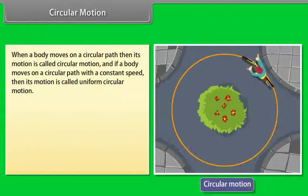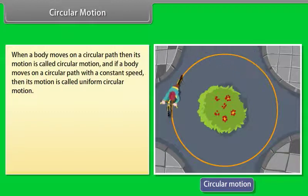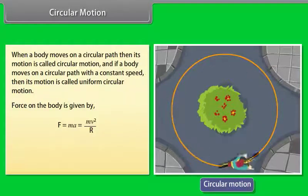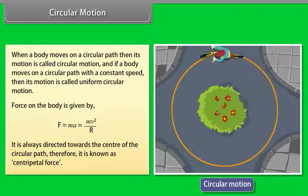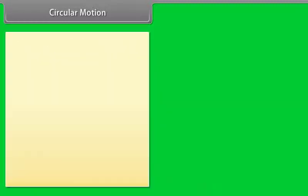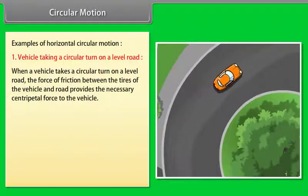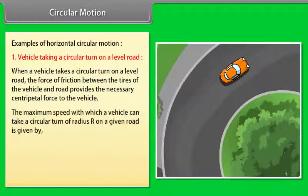Circular Motion: When a body moves on a circular path, its motion is called circular motion. If it moves with constant speed, it is uniform circular motion. The force on the body is F = MA = MV²/R, always directed toward the center — known as centripetal force. For a vehicle taking a circular turn on a level road, friction provides the centripetal force. The maximum speed is V = √(μRg).